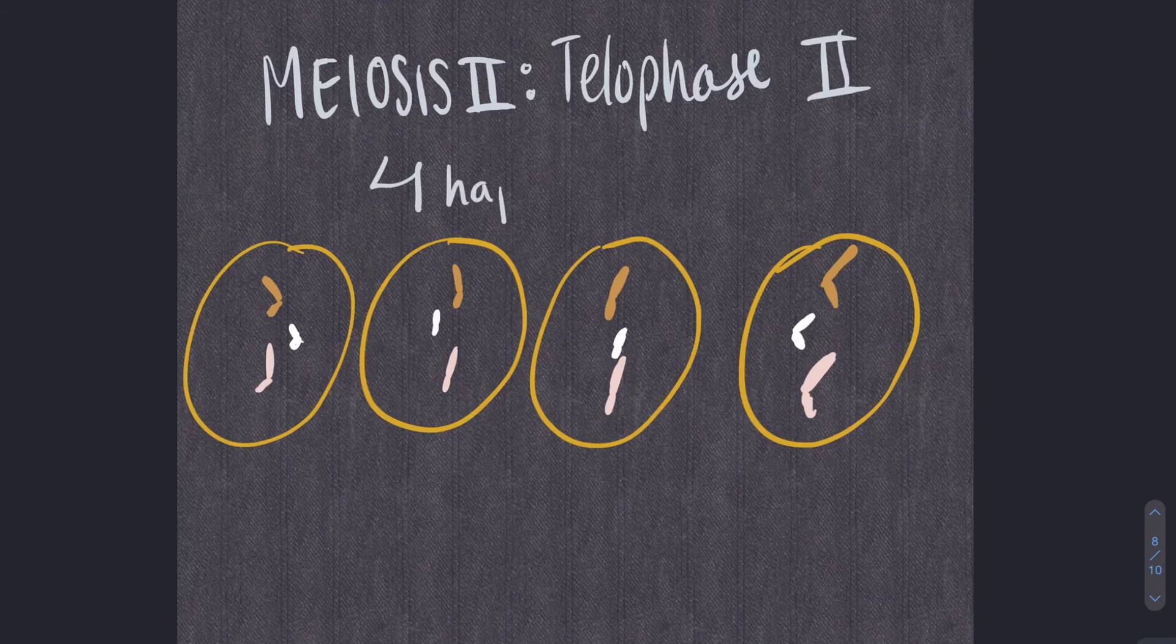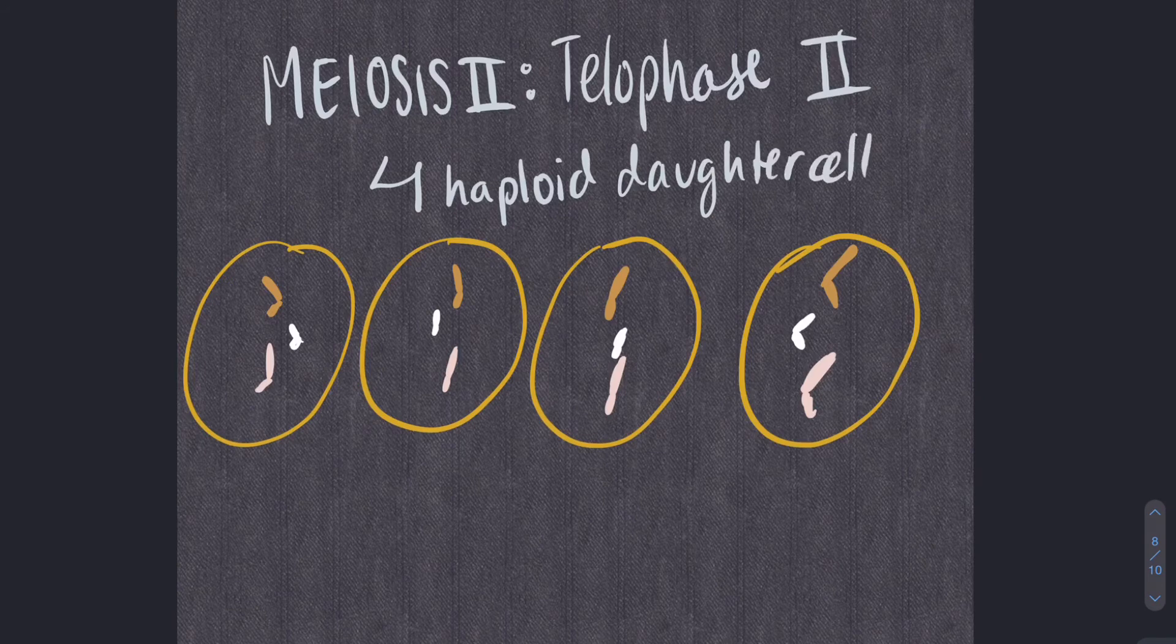The next stage is telophase II. The cell split, resulting in four haploid daughter cells, each with one set of unduplicated chromosomes.